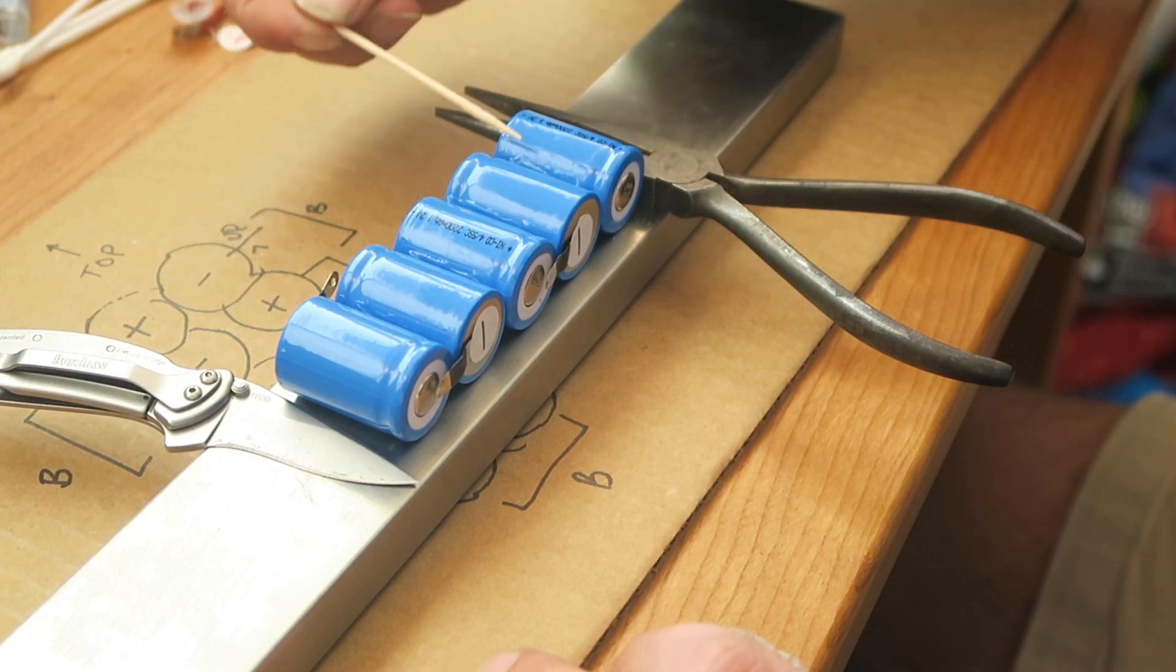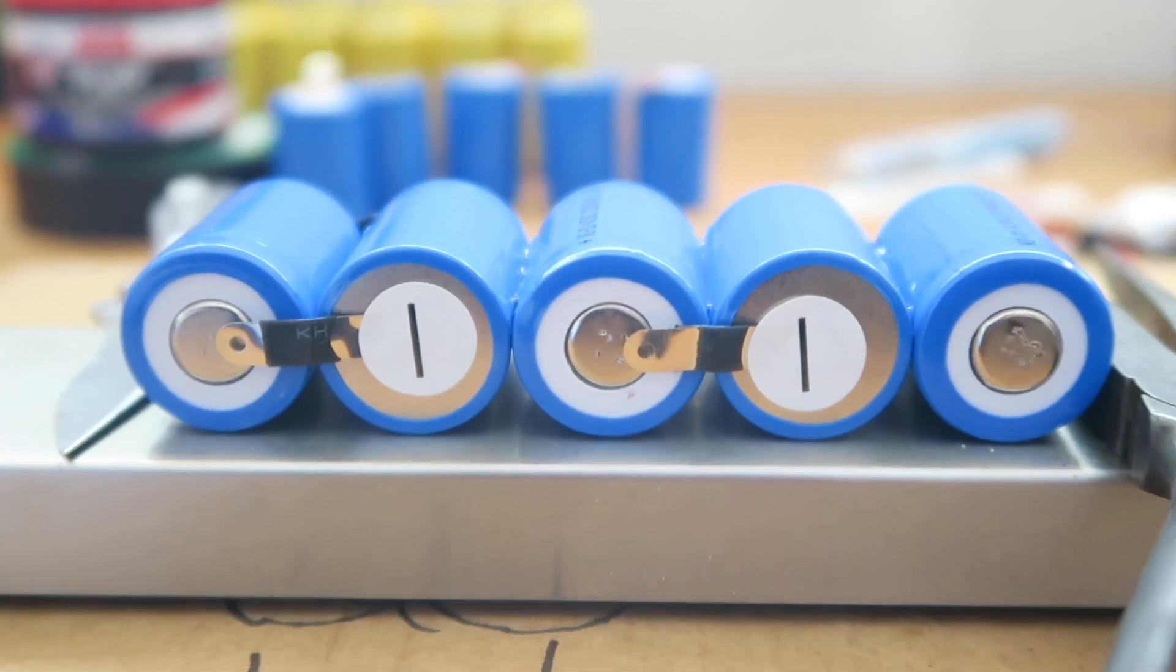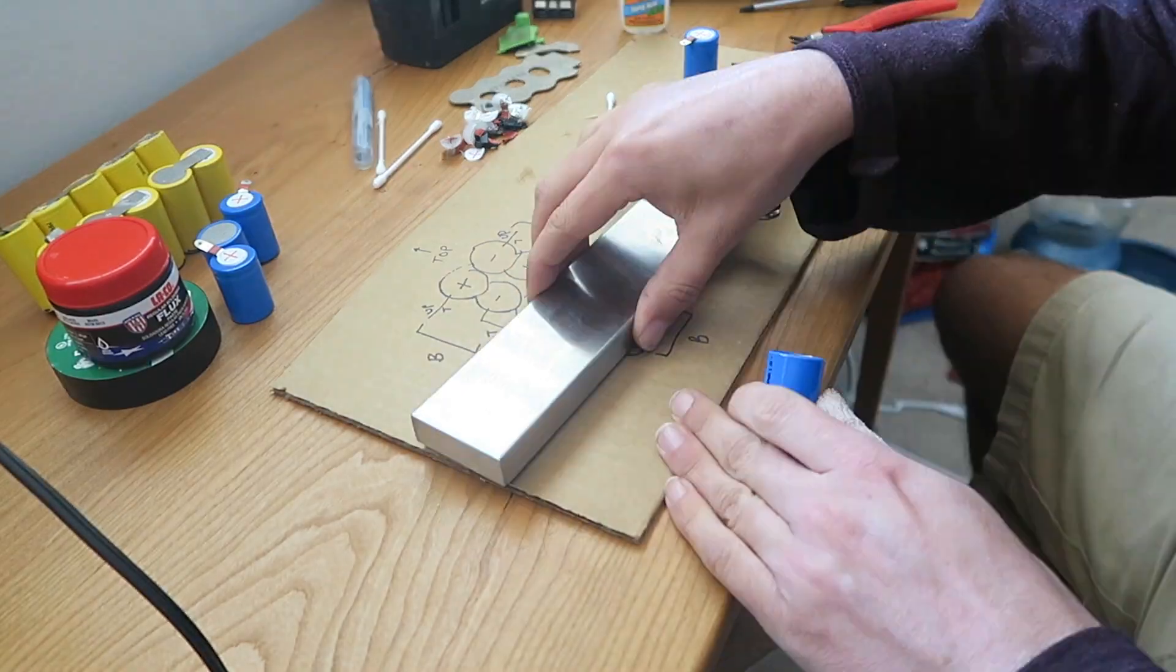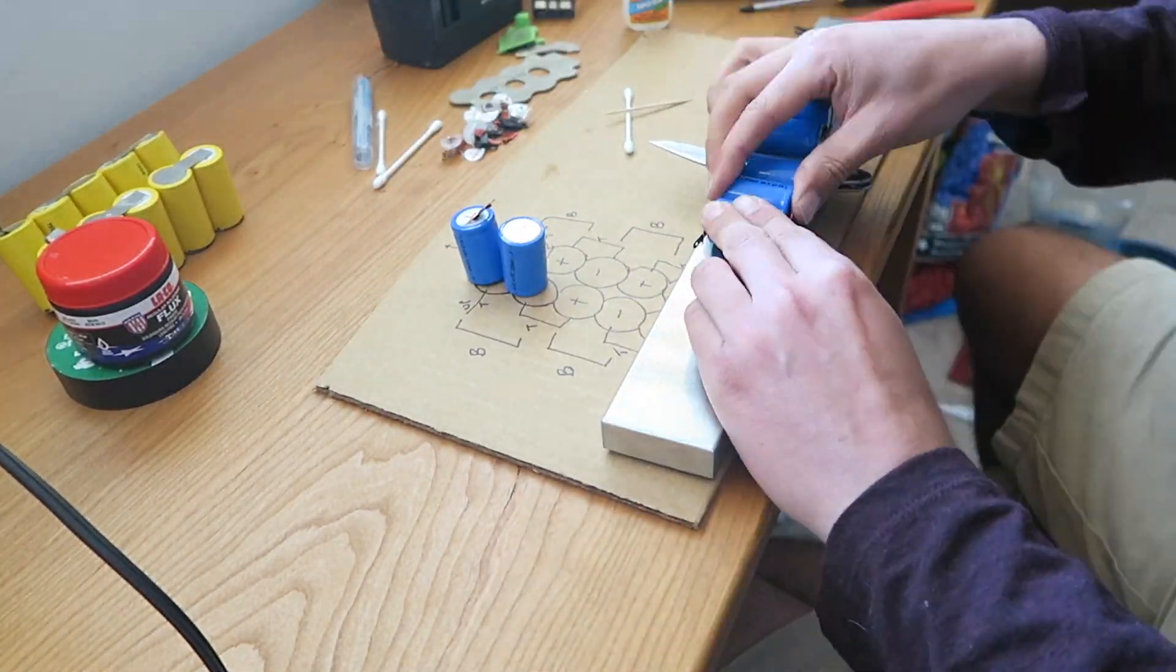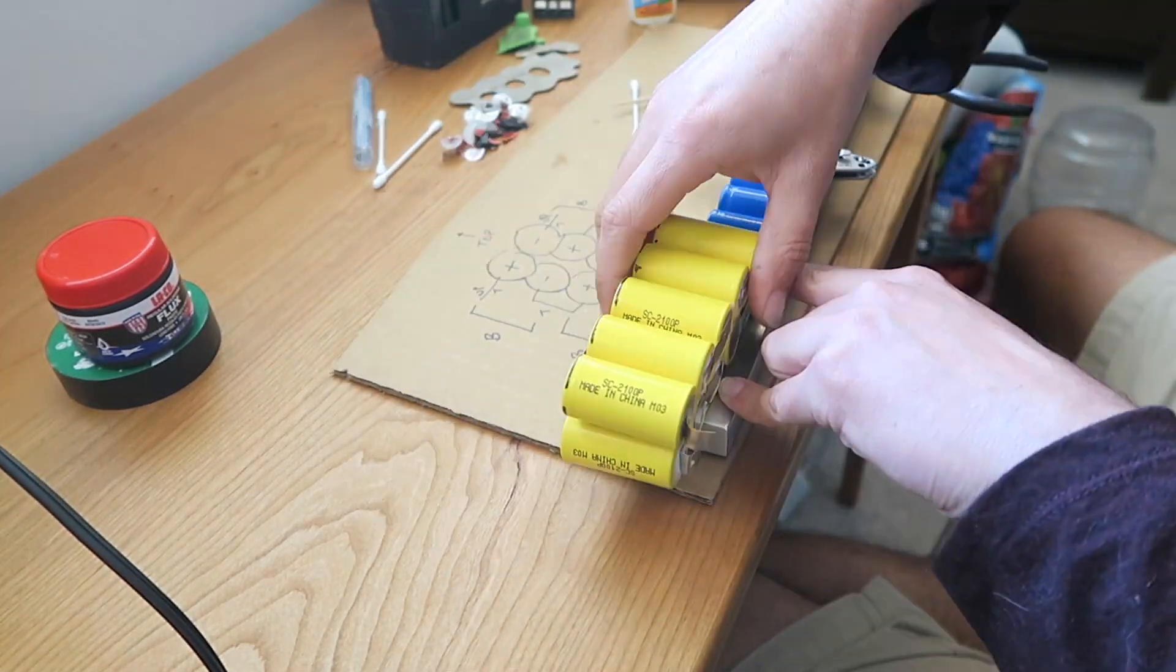Now, another mistake I made here was using too thick of a super glue, or too much of it, potentially. It made it take very long to dry. So, maybe something like hot glue or just using a thinner amount may have been smarter.